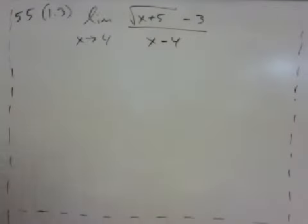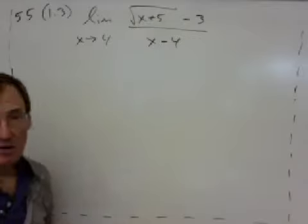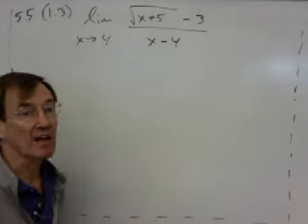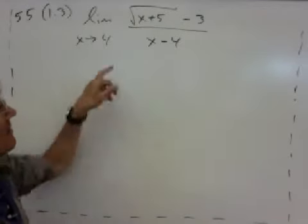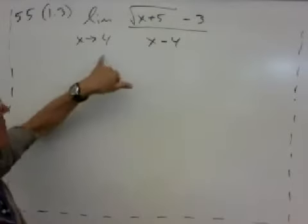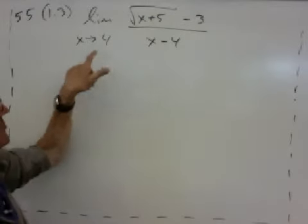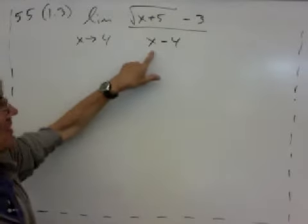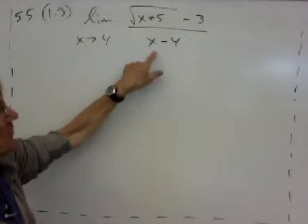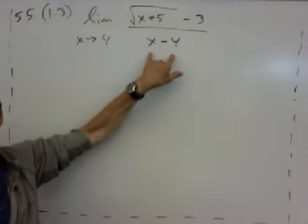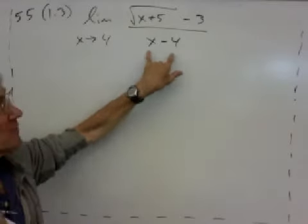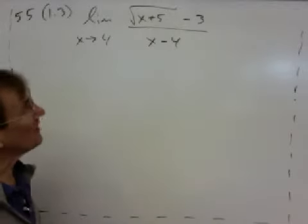So we're going to rationalize. Again, we have a radical. The first thing we want to think about is, maybe we should rationalize the numerator or rationalize the denominator to get rid of that radical. We should check, even before we do that, just what happens if x equals 4. So if I let x equal 4 here, you can see the denominator is going to be 0, so that's going to be a problem. So we've got to do something before we let x equal 4.